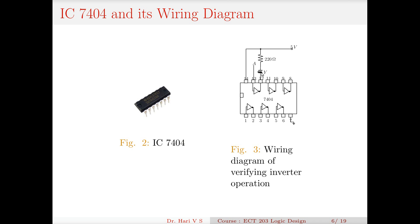This is a normally-on LED connection. You can also connect it so that when the output becomes high it glows — a normally-off connection — but the problem is that the sourcing current may not be enough to drive the LED. An LED is typically driven by a few milliamperes, so it is wise to use the normally-on connection like this. In the lab also you can take care of this. So if pin A is connected to high, the output will be low and the LED will glow. When A is connected to ground, the output is high and the LED will not glow. This is the wiring diagram for verifying the inverter operation.